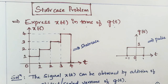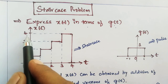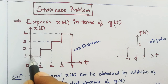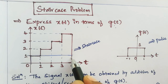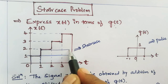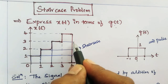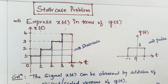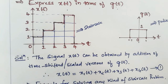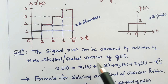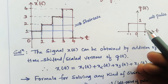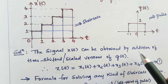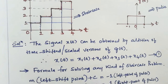The staircase is a combination of four steps. We can say: this is the first step, this is the second step, this is the third step, and this is the fourth step. So there are four steps in the staircase, and we have to express X of T in terms of G of T. The signal X of T can be obtained by addition of time-shifted or scaled versions of G of T.